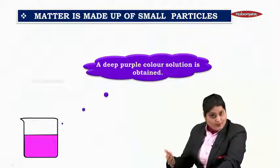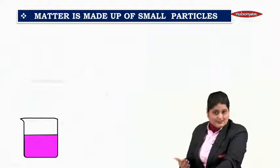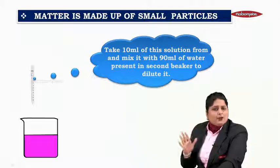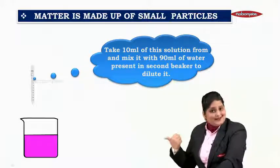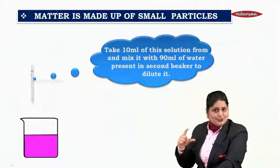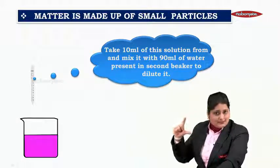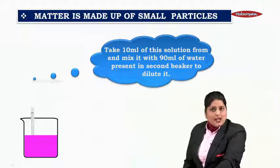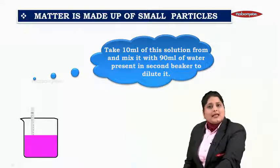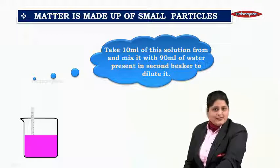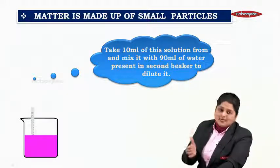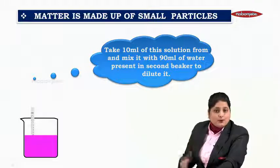Next, we will move ahead with the experiment. What you have to do next is take 10 ml of this solution. From this beaker, you will be taking 10 ml of solution using a measuring cylinder. Take 10 ml of this solution and mix it with 90 ml of water present in the second beaker to dilute it. We are going to dilute it further and see what colour we are getting.